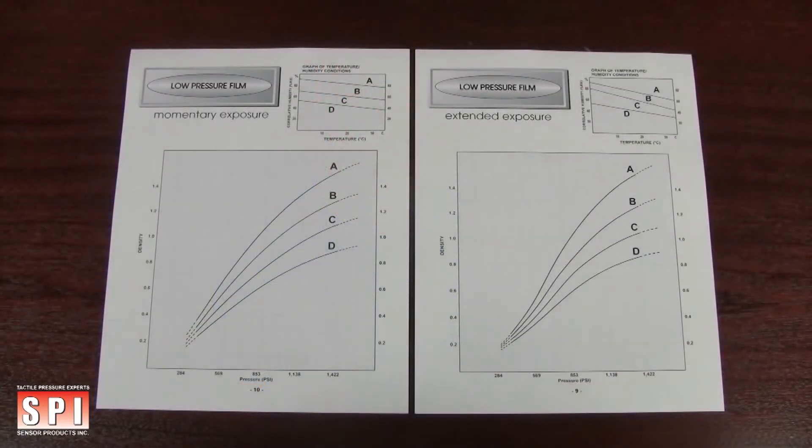Be sure to record the approximate length of time, as well as the temperature and humidity prevalent in the experiment. You will need these variables in order to accurately determine the pressure applied. Consult the color correlation manual included with your order for further information.